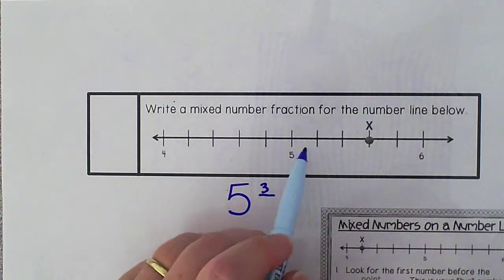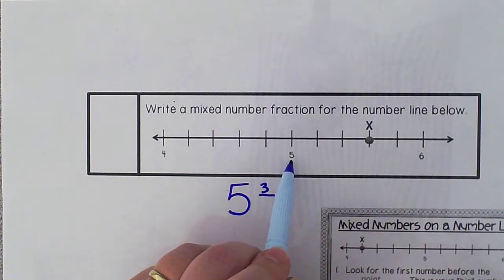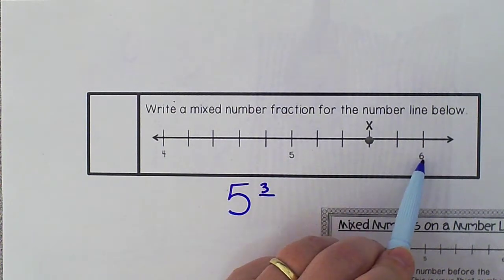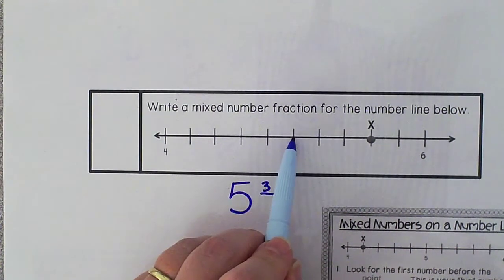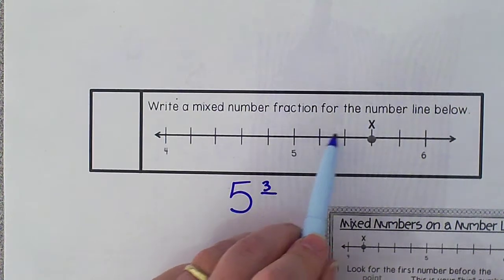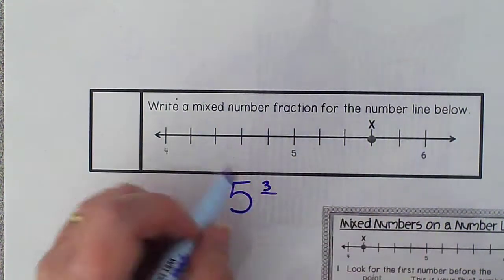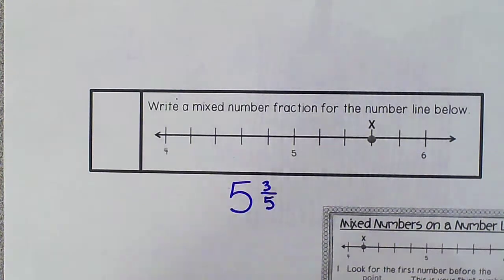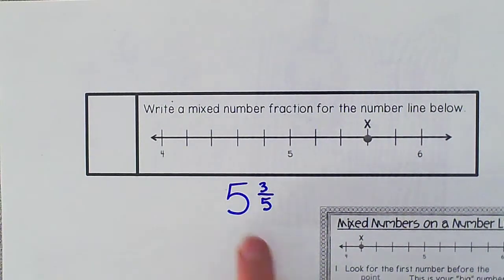Then we're going to count the number of spaces from our 5 until we land on the next number, 6. So 1, 2, 3, 4, 5. Our mixed number is 5 and 3 fifths.